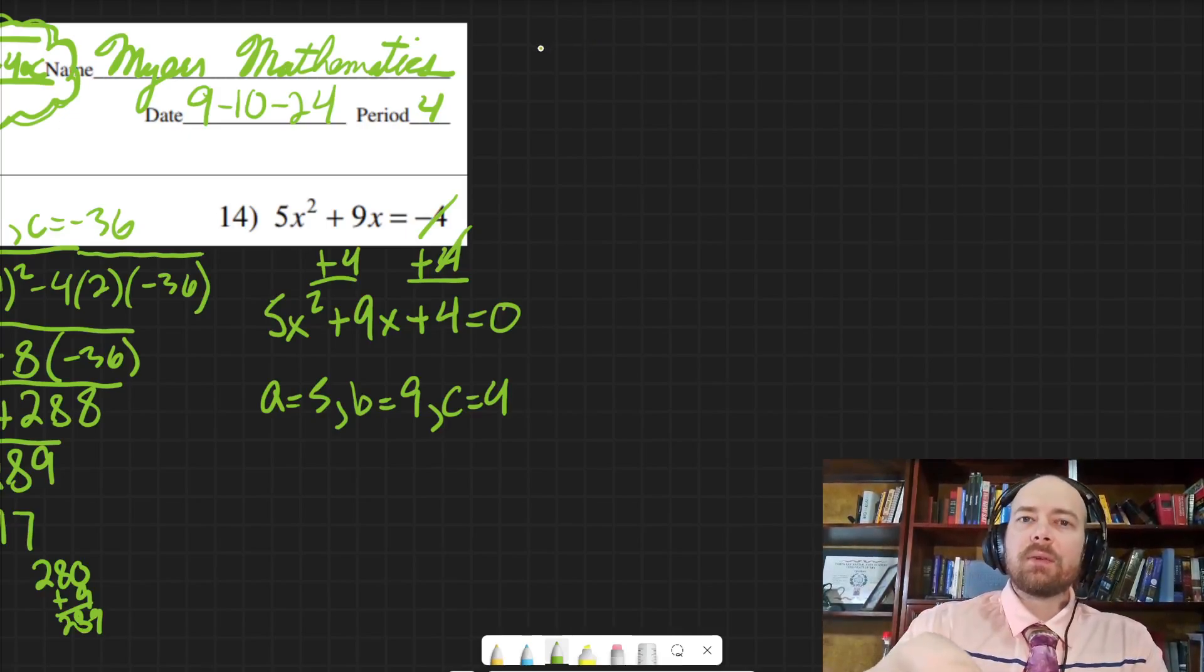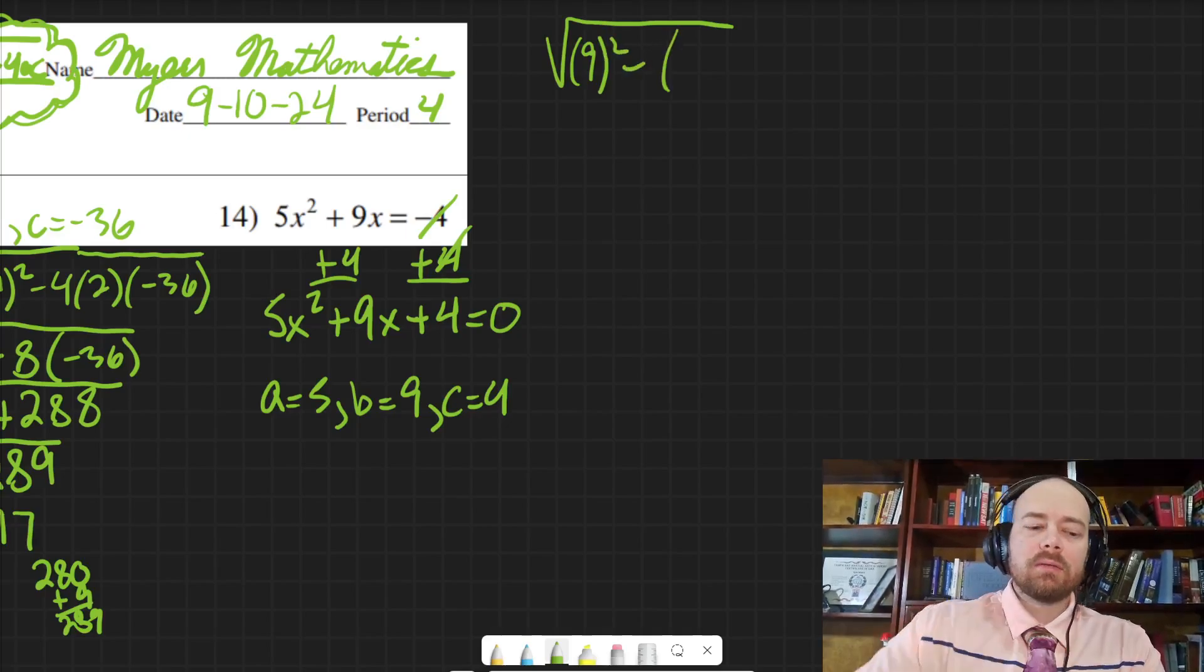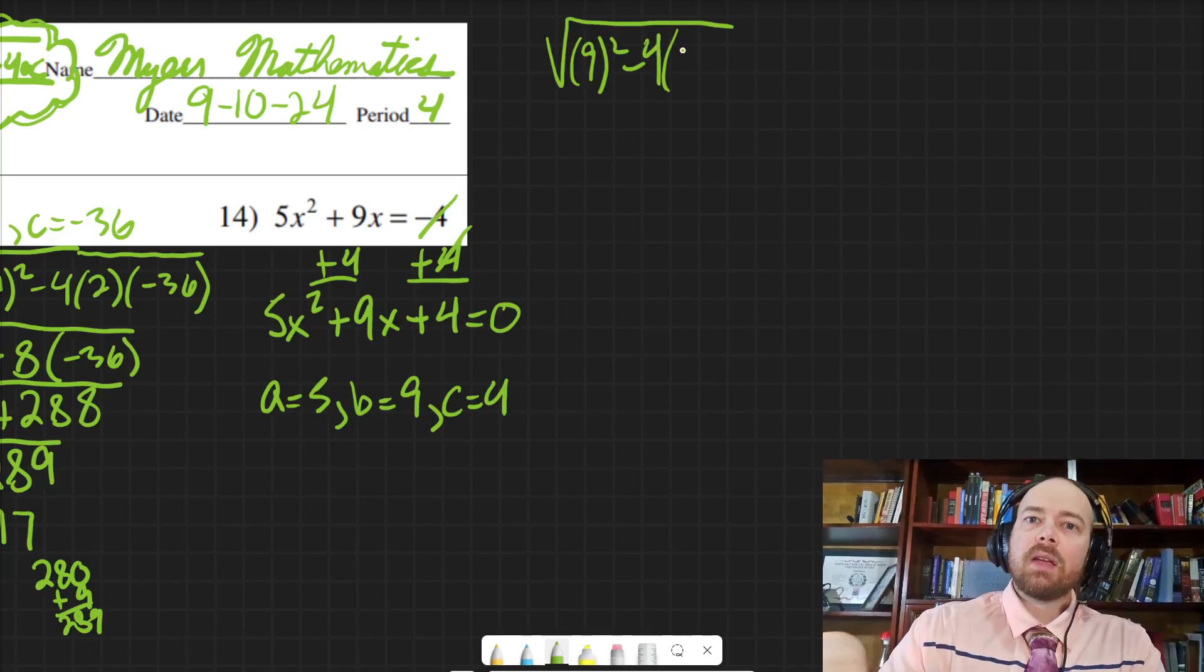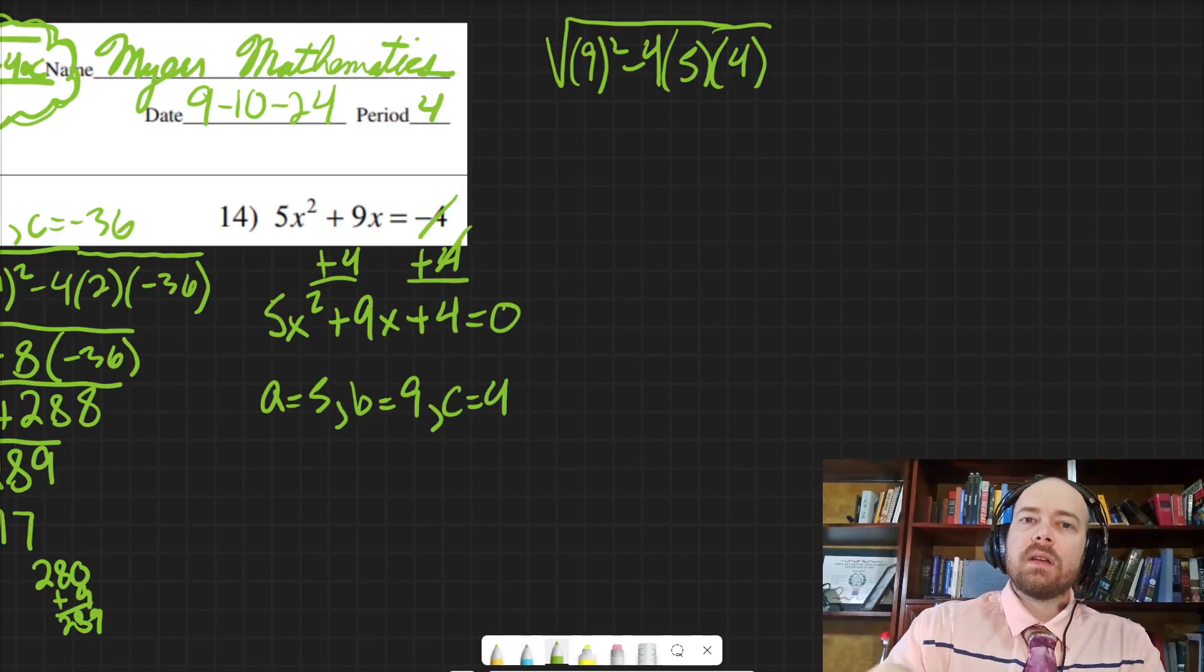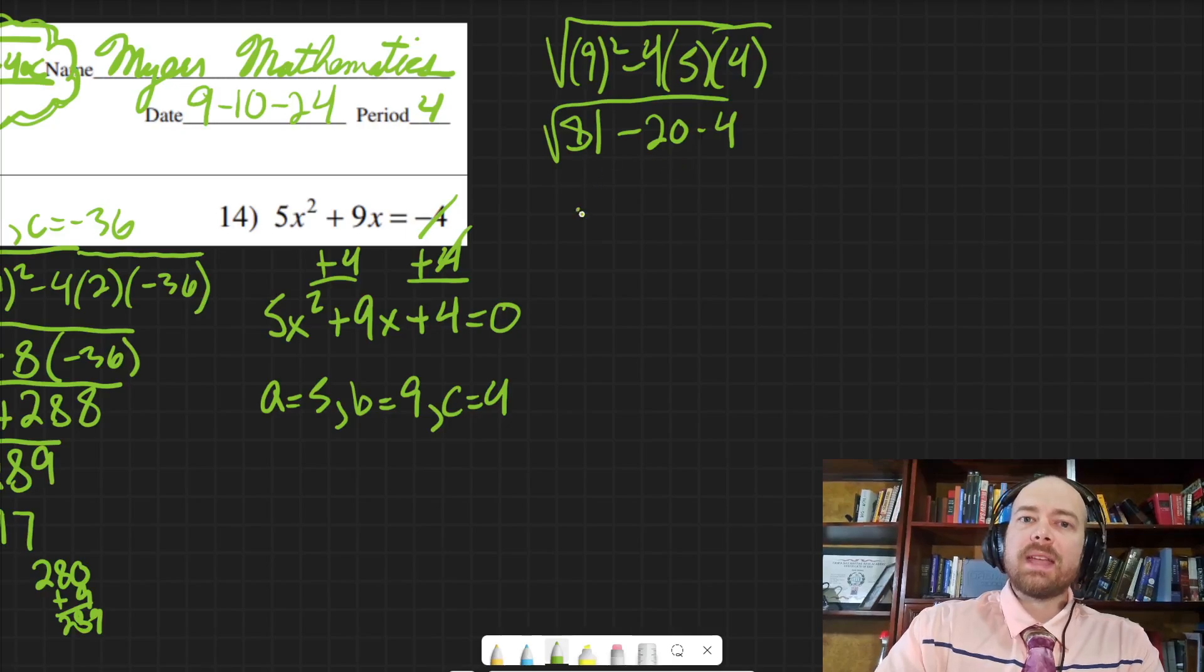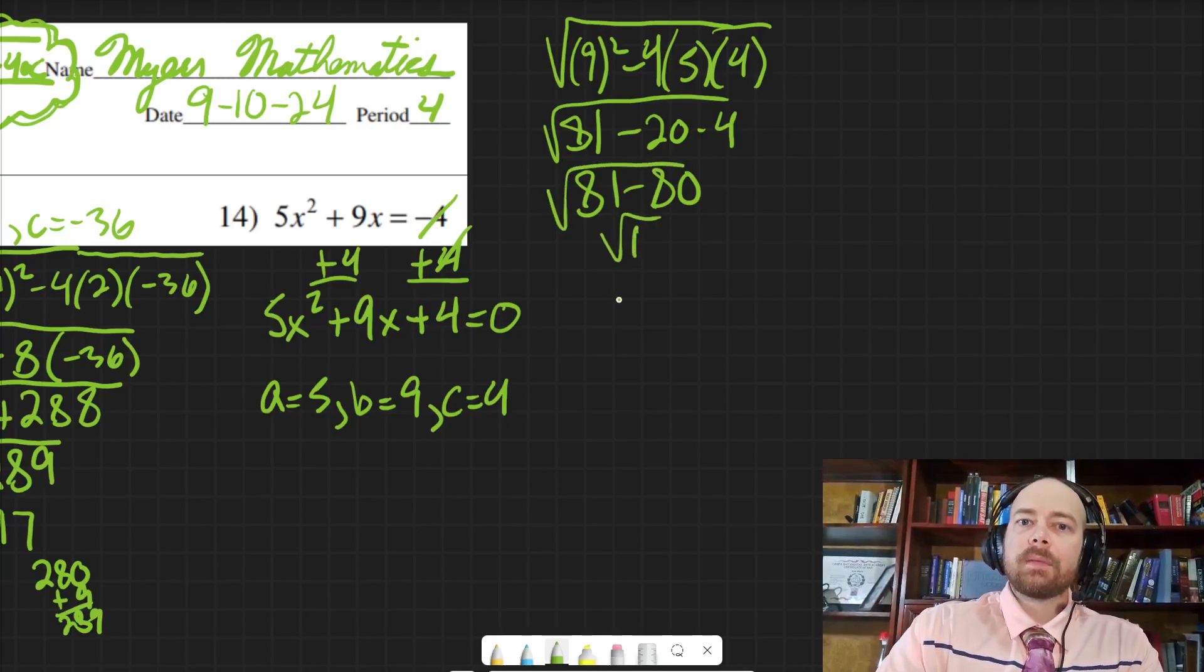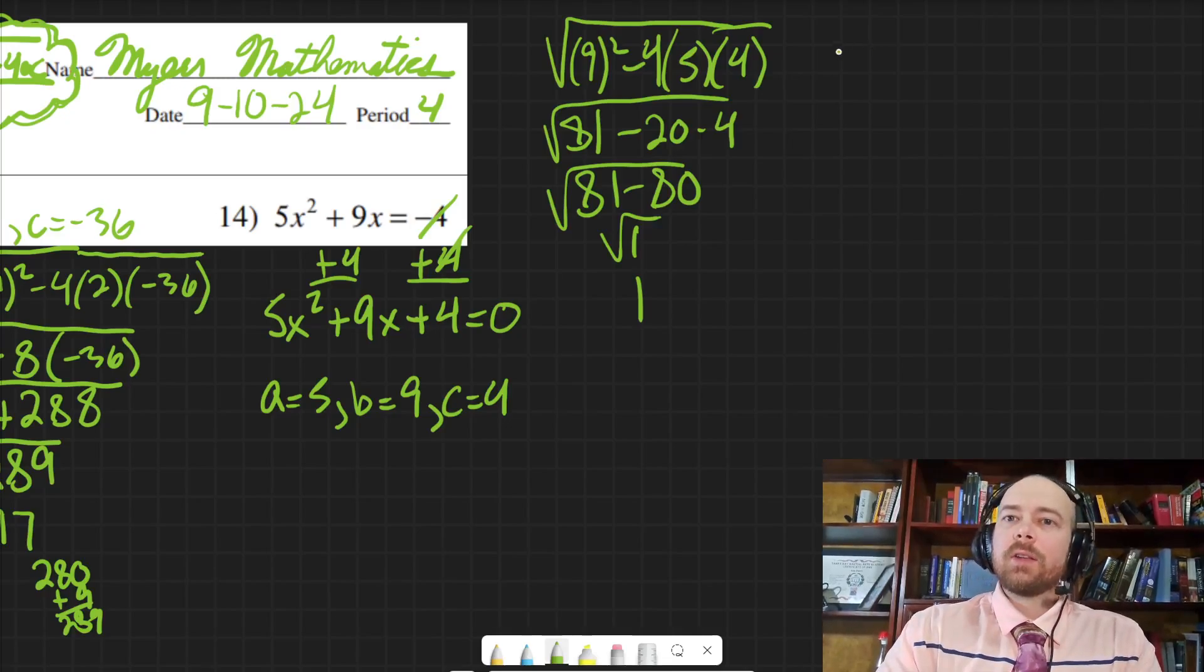And then we have the square root part. So the square root, b squared minus 4ac. So 9 squared, that's 81. 4 times 5 is 20. 20 times 4 is 80. So this is going to end up being kind of nice. That's just going to be 1. And the square root of 1 is 1. That's not too bad. So let's put that into the formula.